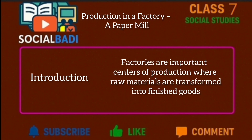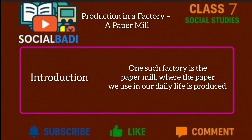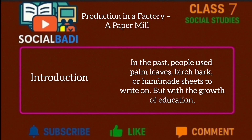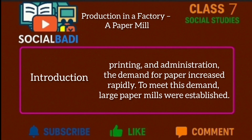Factories are important centers of production, where raw materials are transformed into finished goods. One such factory is the paper mill, where the paper we use in our daily life is produced. In the past, people used palm leaves, birch bark and handmade sheets to write on. But with the growth of education, printing and administration, the demand for paper increased rapidly. To meet this demand, large paper mills were established.